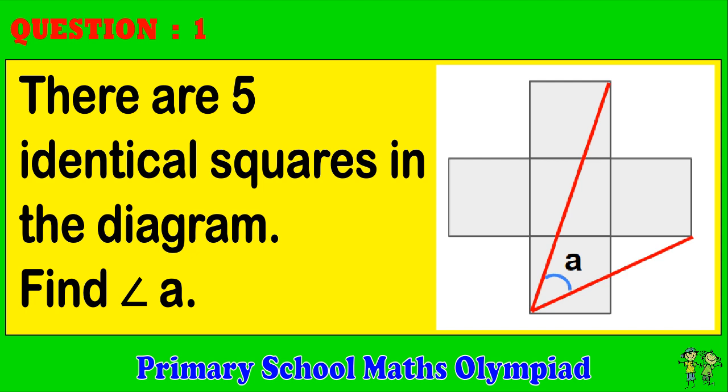Question 1: There are five identical squares in the diagram. Find angle A.